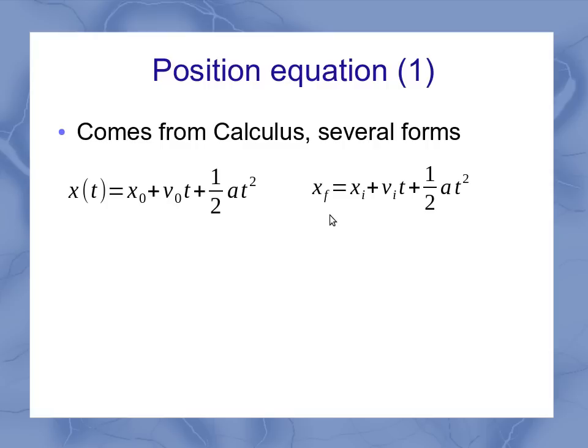Now some textbooks use an alternate notation, where we're talking about the final position, the initial position, and the initial velocity. If you take this form of the equation and just move the initial position over to the other side of the equation, that's our change in position, or displacement.